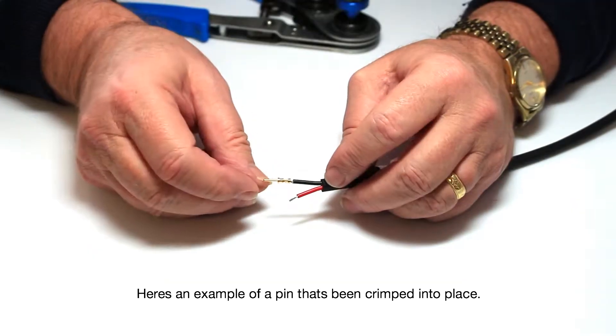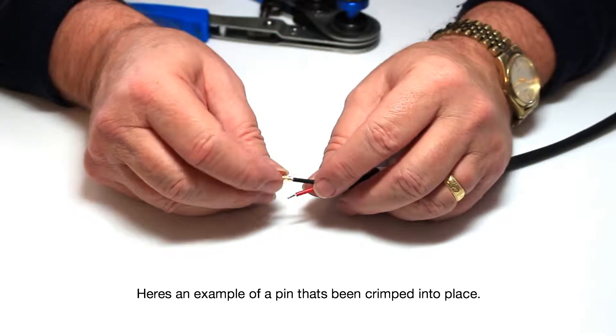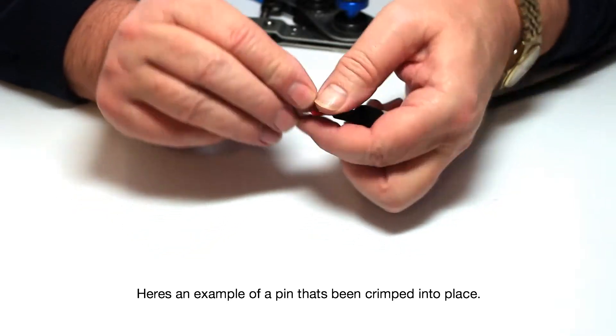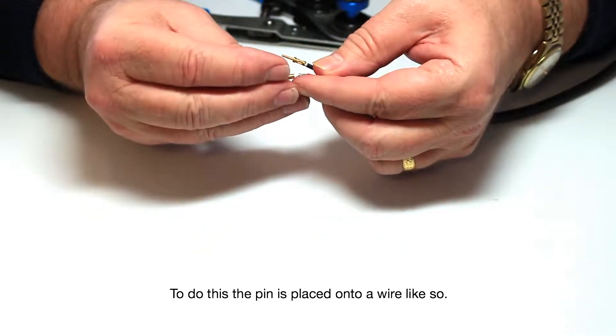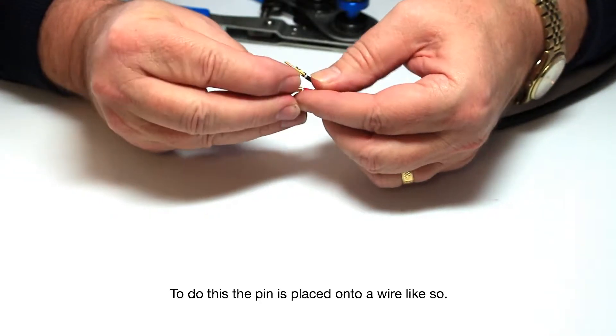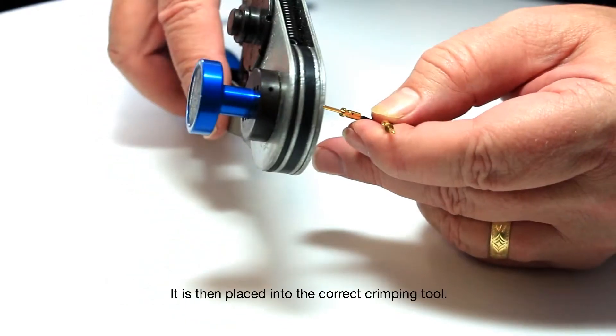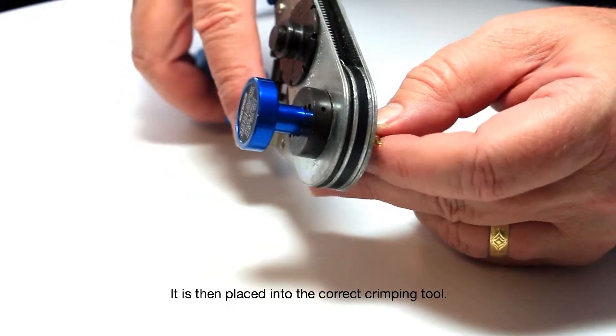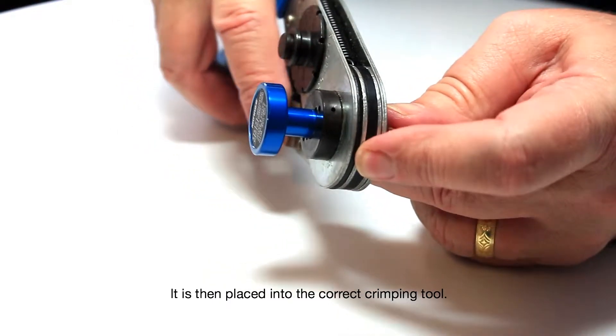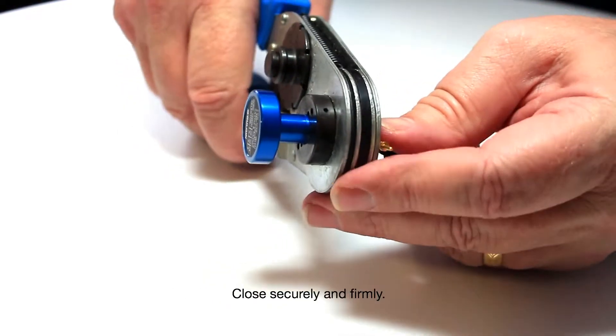Here's an example of a pin that's been crimped into place. To do this, the pin is placed onto a wire like so. It is then placed into the correct crimping tool. Close securely and firmly.